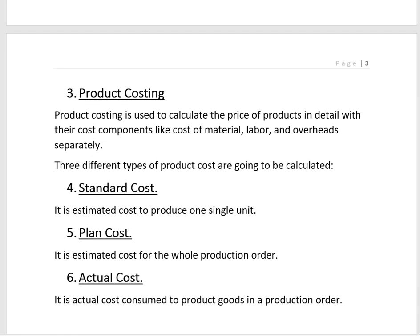The third component is Product Costing, used to calculate the cost of a product. Multiple product costs are available: standard cost, plan cost, and actual cost. Standard cost is the per-unit cost of one unit; plan cost is the cost of one production order; and actual cost is the actual cost consumed in the production order.